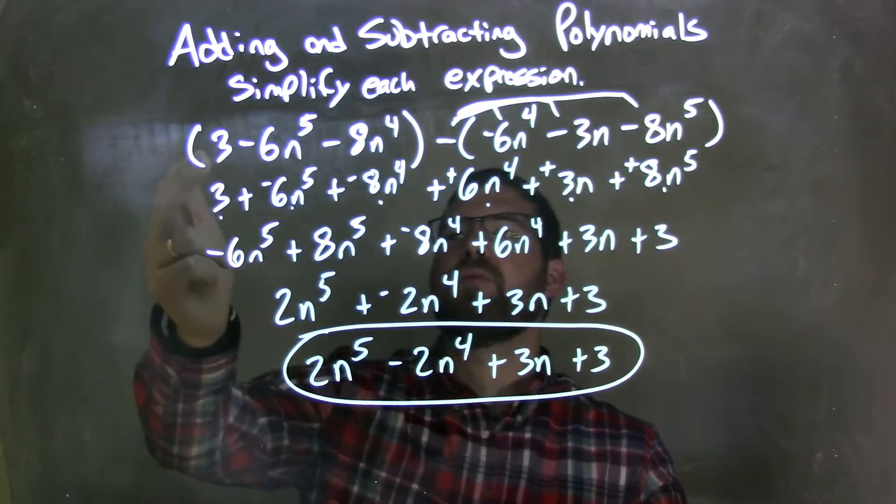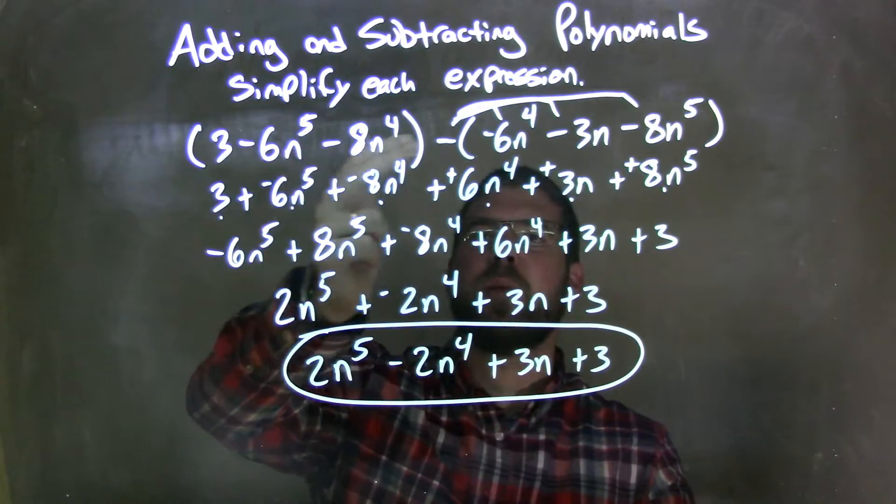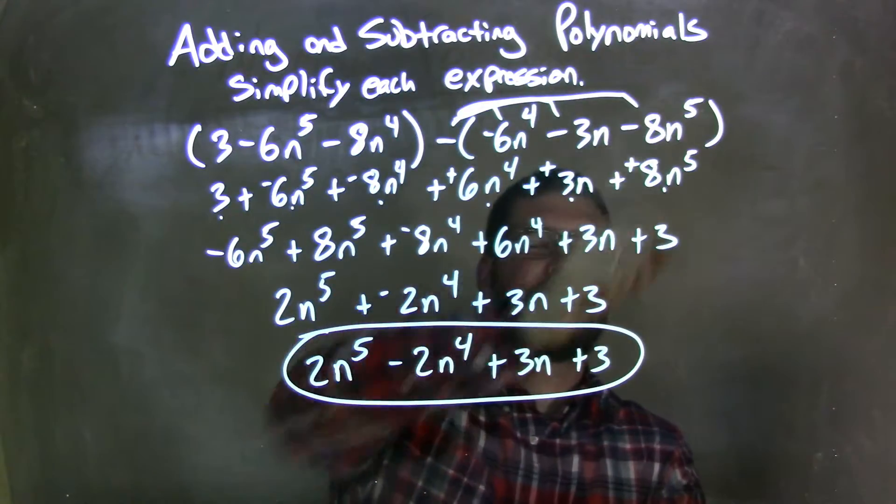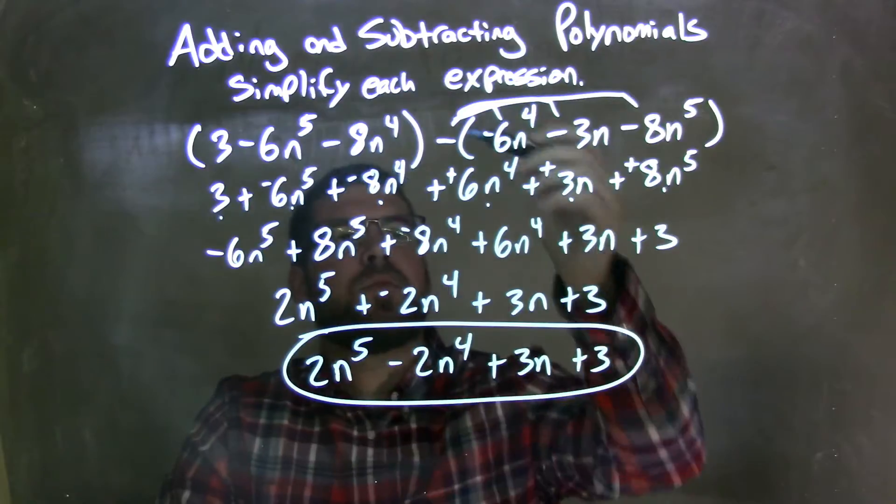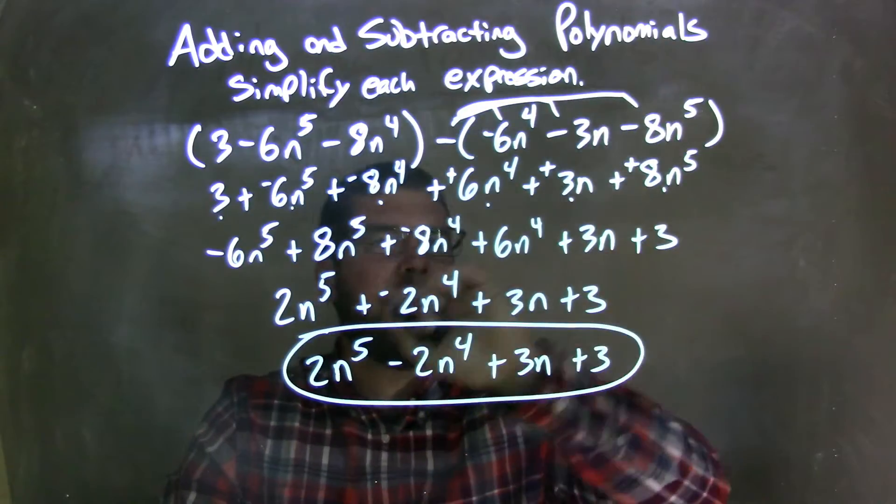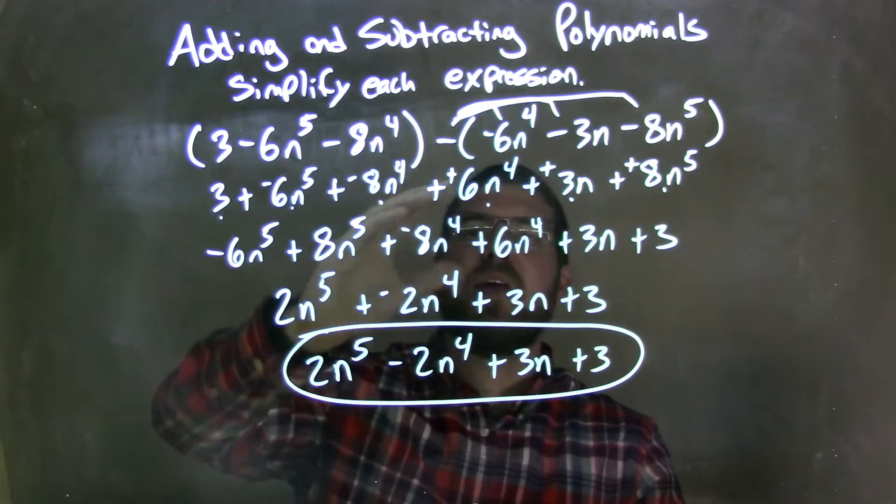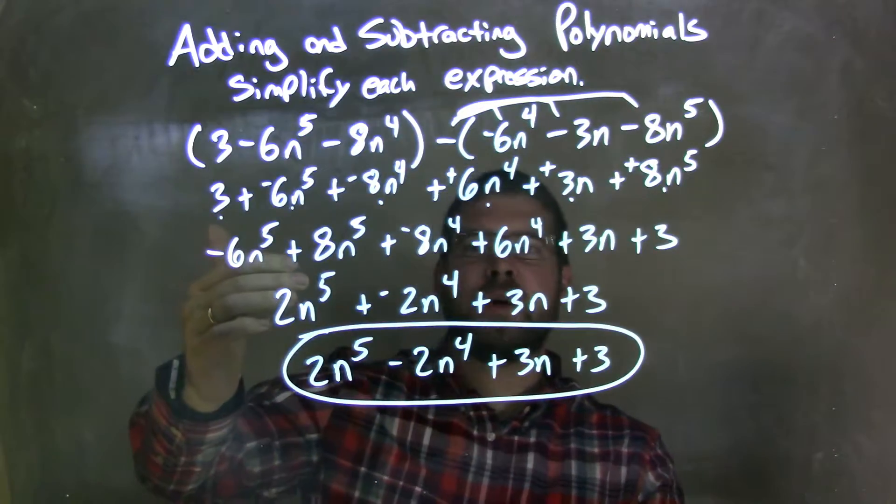So let's recap. We're given parentheses 3 minus 6n to the 5th minus 8n to the 4th and parentheses minus parentheses negative 6n to the 4th minus 3n minus 8n to the 5th. I distributed the minus sign across and made everything adding a negative. Here I made everything adding a negative as well. I find it easier.